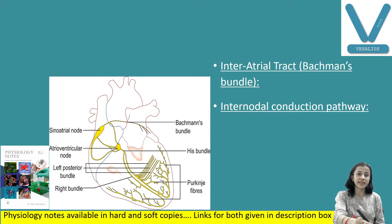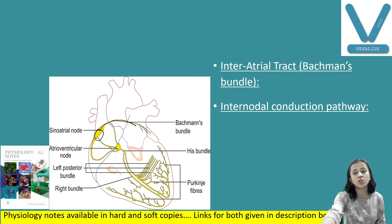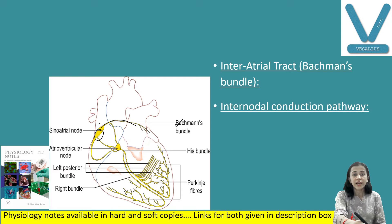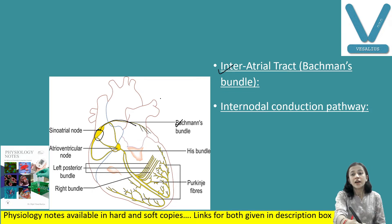The interatrial track connects one atrium to the other. It starts from the SA node and is also known as Bachmann's bundle. It is a band of specialized muscle fiber that runs from the SA node and connects to the other atrium. It causes simultaneous depolarization of the atria.